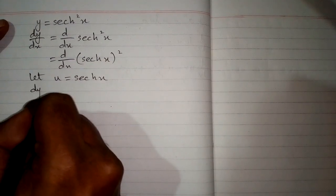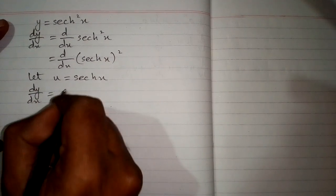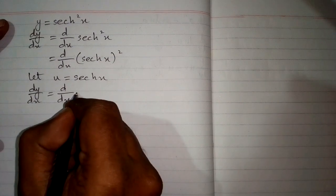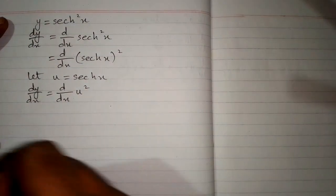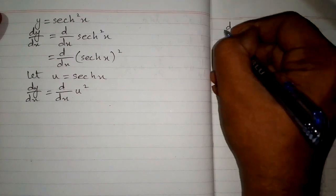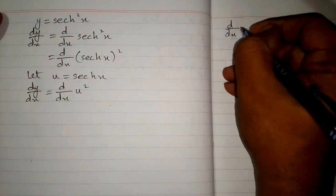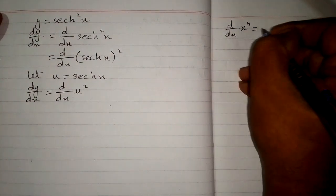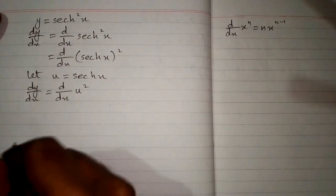So we have dy/dx equals d/dx of u squared. Now we will apply the power rule of differentiation, which is d/dx of x^n equals n times x^(n-1).